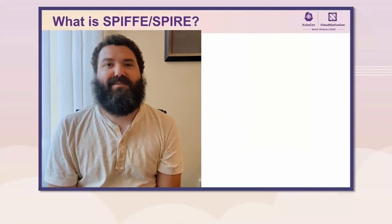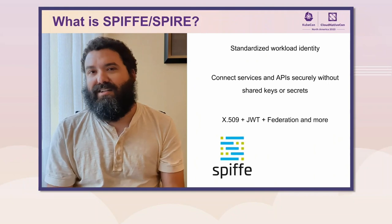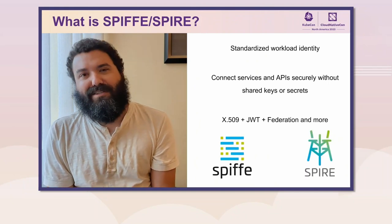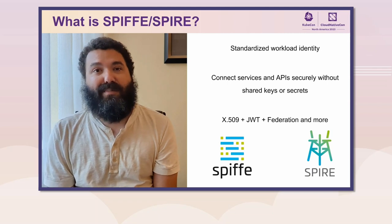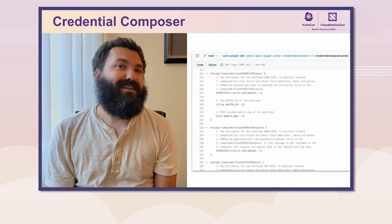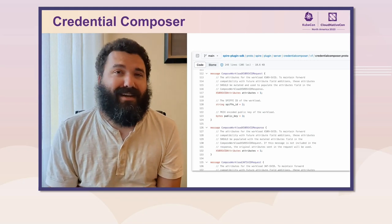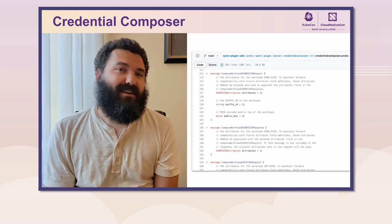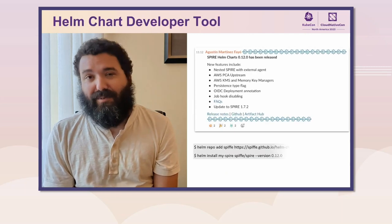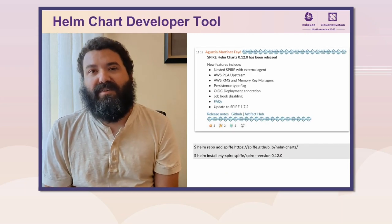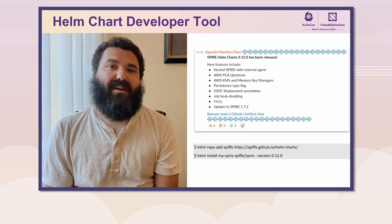Hey everybody, my name is Evan Gilman and I'm a maintainer on the SPIFFE and SPIRE projects. The first update is a brand new plugin in SPIRE called the Credential Composer that allows you to customize certificates and tokens that SPIRE gives back to you. I'm also really excited about a bunch of work we did this year around a new Helm chart, a developer tool, and generally a whole bunch of work around making SPIFFE easier to use and faster to get up and running.